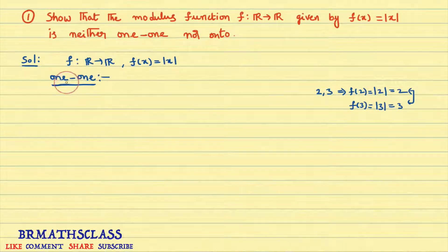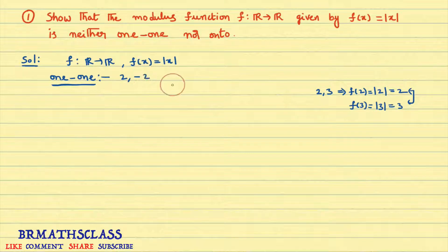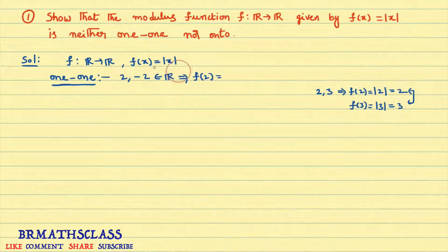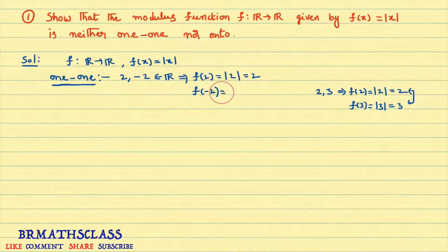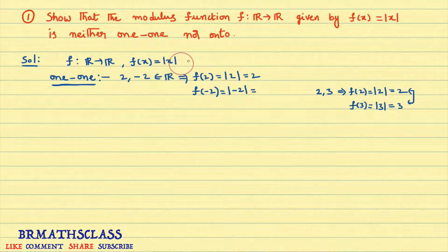We need to show the function is not one-one. I will take different elements, for example 2 and -2. Both are real numbers and they are different elements. f(2) is modulus of 2, which is 2. Now, f(-2) is modulus of -2, which is also 2. Modulus is like a positive machine — whether you give it a positive or negative number, it always returns a positive number. So modulus of -2 is 2.